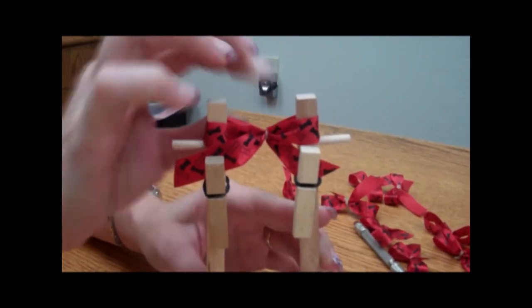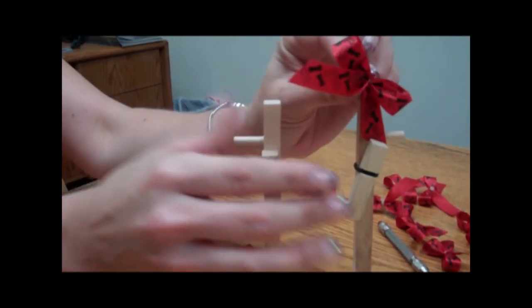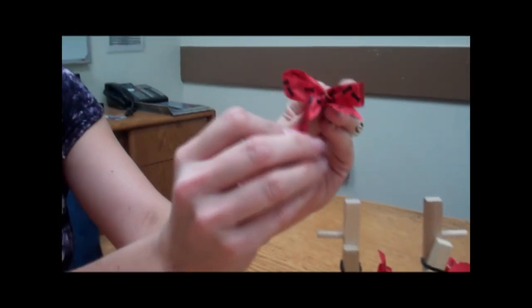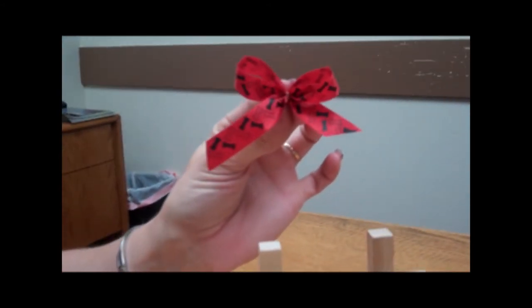Once you have it nice and tight, you can release the clothespins and then you can adjust your little bow. That's a pretty easy way to make a nice little bow.